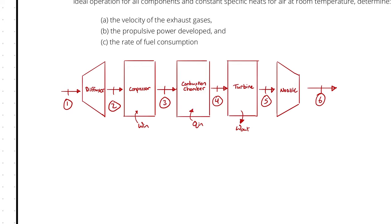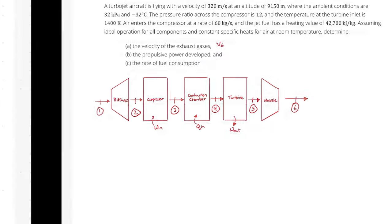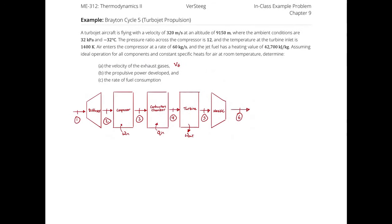These are our six state points. Rather than immediately building a property table, let's think through what we actually need to solve this problem. The first thing asked for is the velocity of the exhaust gases — that's V6. To find V6, I'll perform an energy balance on the nozzle, which requires knowing enough to fix states 5 and 6. I don't yet know state 5, but I have the temperature at state 4 and could figure out expansion from 4 to 5 if I knew the turbine work.